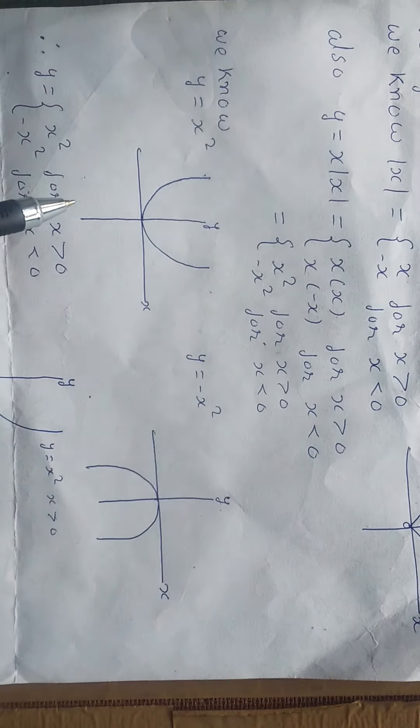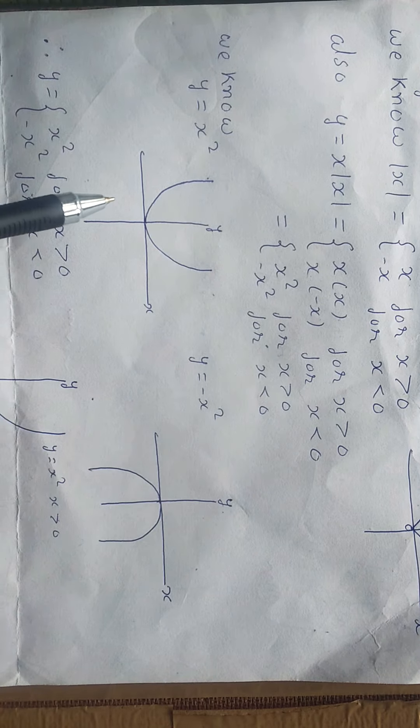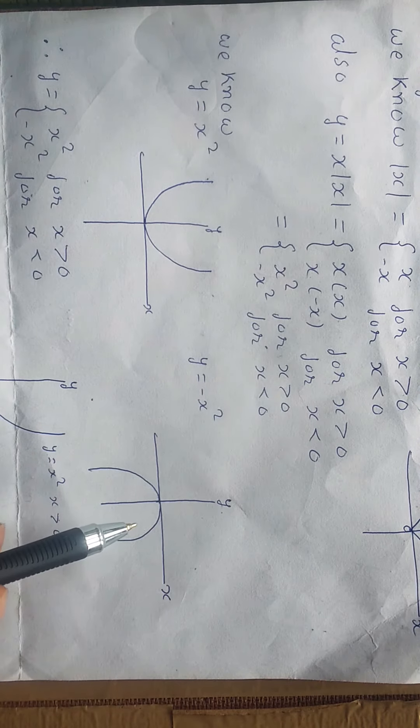Now we know the graphical representation of y equals x squared, which is an upward parabola, and y equals minus x squared, which is a downward parabola.